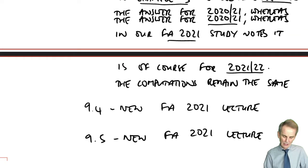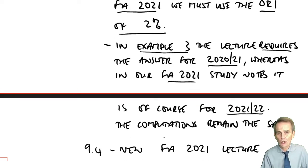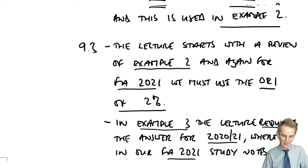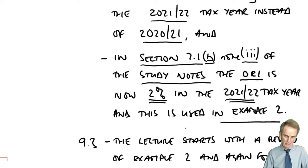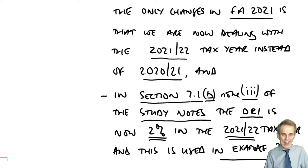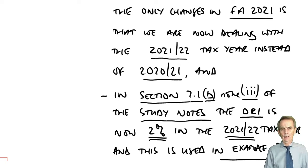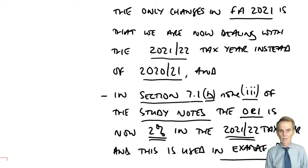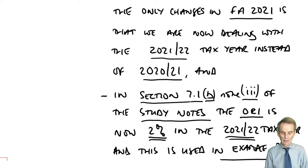Do please remind yourself before the 9.2 and 9.3 lectures to be aware of those changes — you might want to note that in your notes so you don't get confused where in the lecture I'm talking about a 2.25% calculation, whereas in your study notes it's actually 2%. This lecture will now roll into the FA 2020 Lecture 9.1.